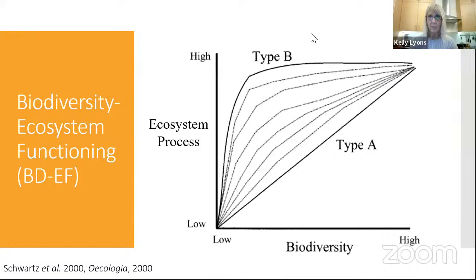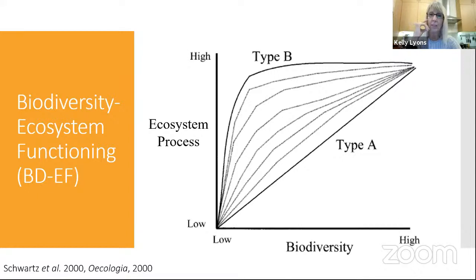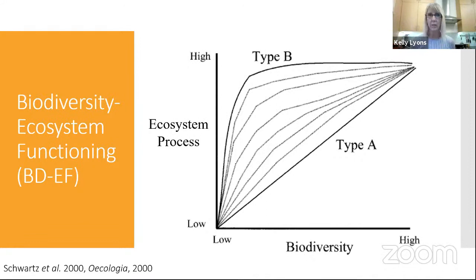This is all predicated on biodiversity ecosystem functioning theory. The figure from a paper I wrote with my PhD advisor Mark Schwartz shows biodiversity on the x-axis and any ecosystem process — invasion resistance, erosion control, nutrient cycling, carbon retention — on the y-axis. Generally, as diversity increases or is maintained at high levels, you have higher ecosystem functioning. This is really important for carbon sequestration because diverse systems tend to be more productive. Type A curves show every single species matters; type B curves show redundancy where after a certain level, additional species may matter less.